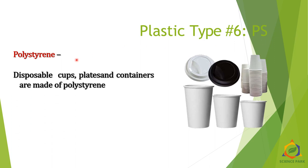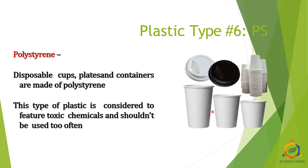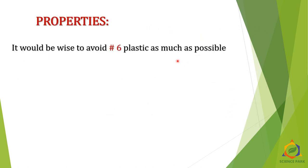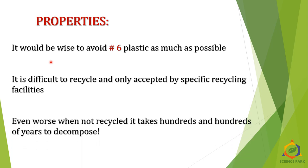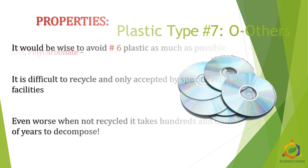Type 6 is PS — polystyrene — and it is very dangerous. All disposable cups, plates, and containers are made of polystyrene. This plastic is considered to feature toxic chemicals and shouldn't be used often — avoid use-and-throw containers, plates, and spoons. It is not recyclable and is only accepted by specific recycling facilities. Even worse, it takes hundreds of years to decompose.